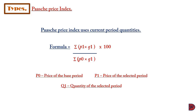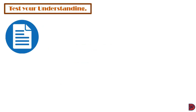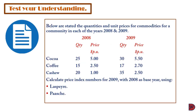Let's test understanding. Below are stated the quantities and unit prices for commodities for a community in each of the years 2008 and 2009. For cocoa: quantity for 2008 is 25, price is $5; for 2009, quantity is 30, price is $5.50. For coffee: 2008 quantity is 15, price per unit is $2.50; for 2009, quantity is 17, price is $2.70.